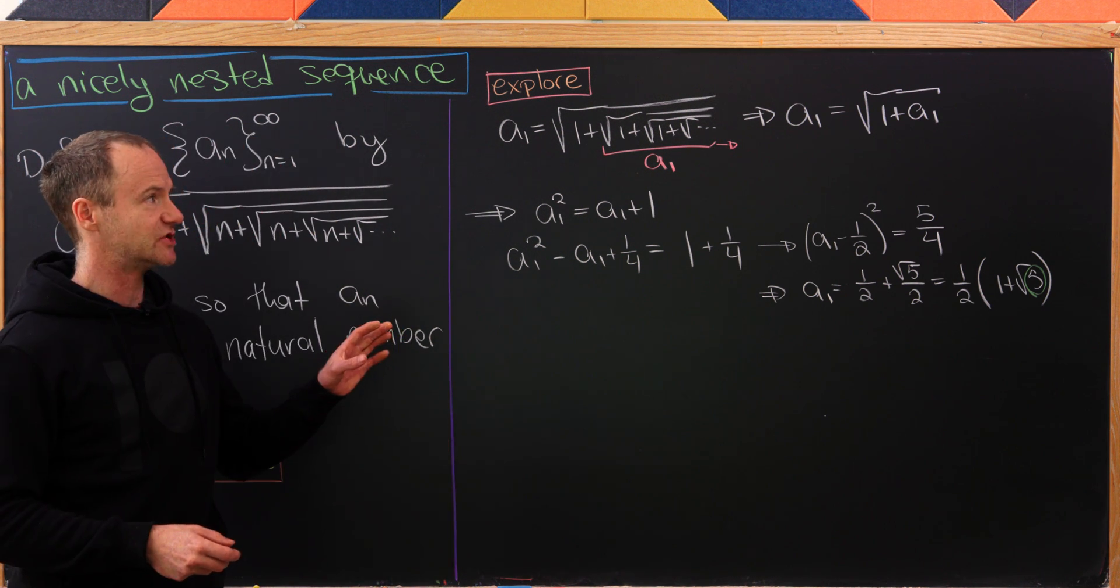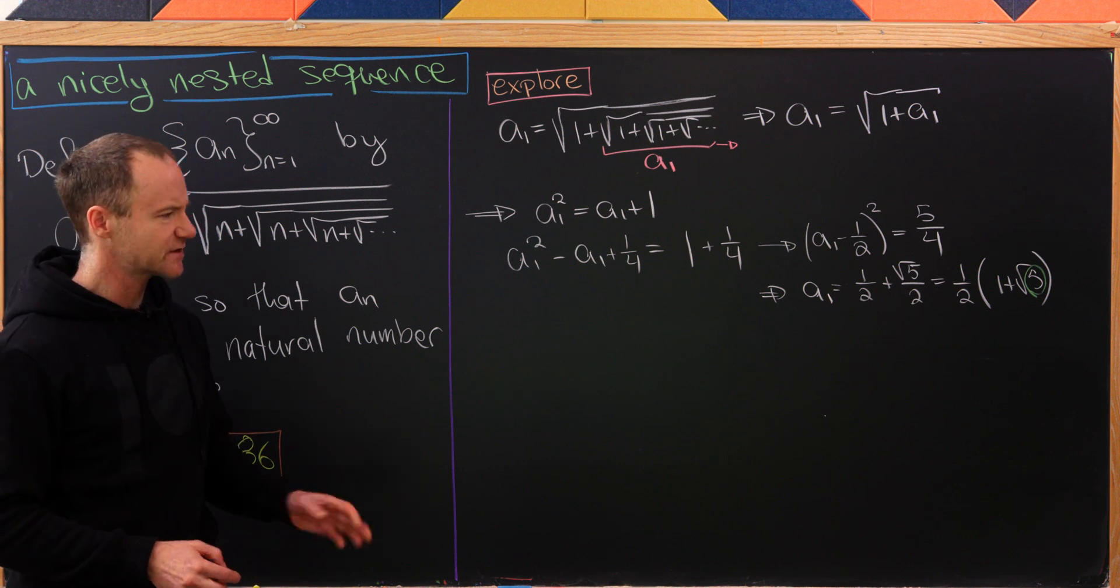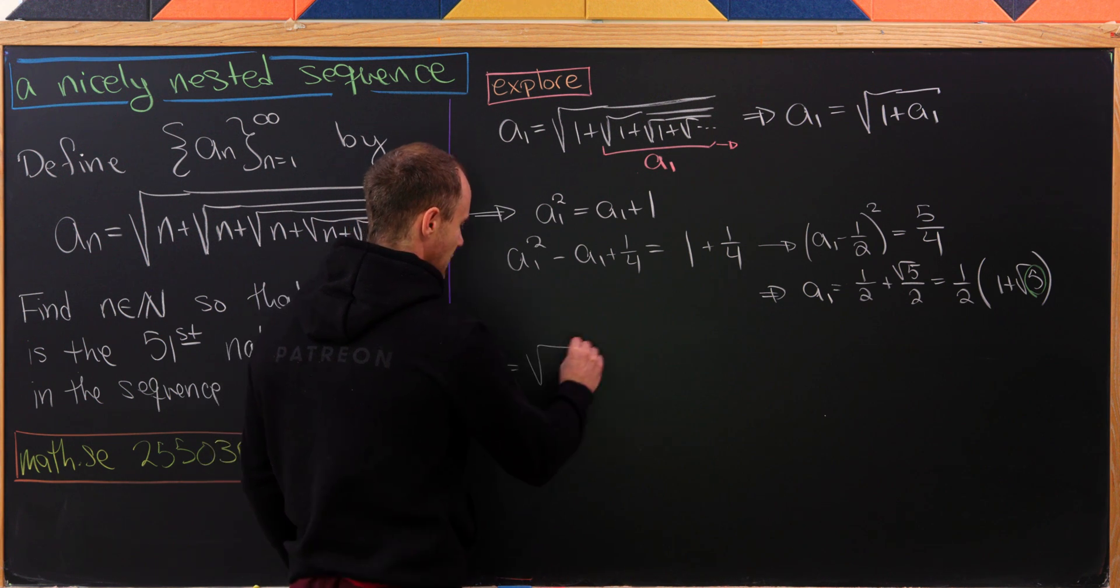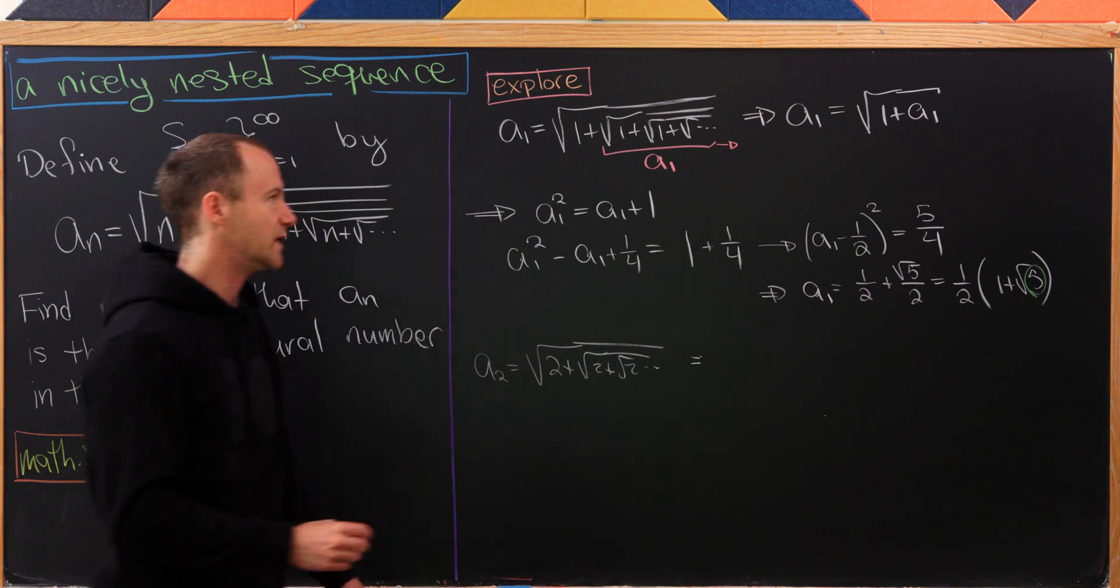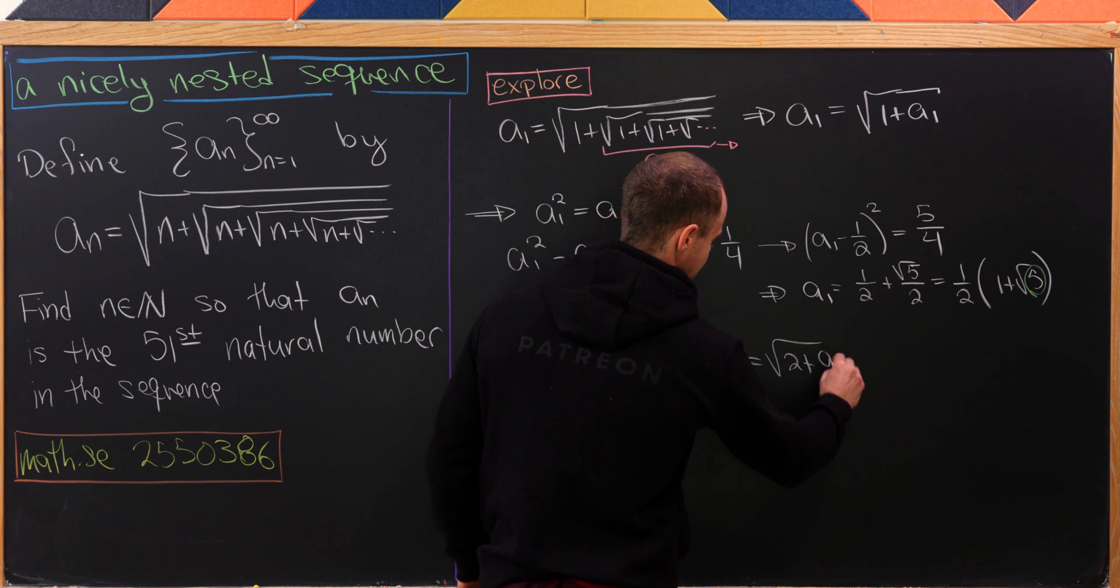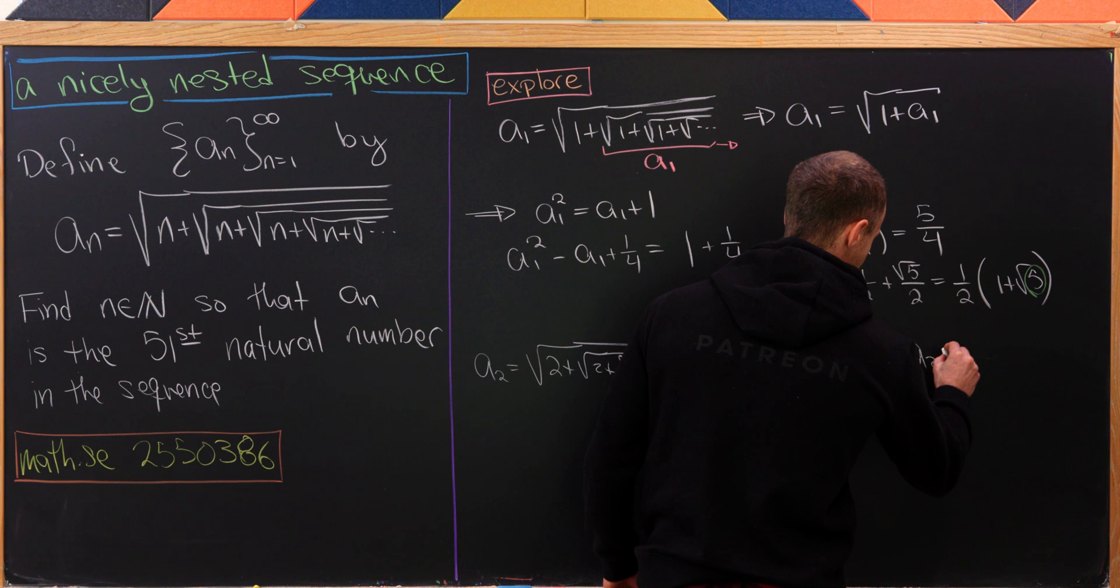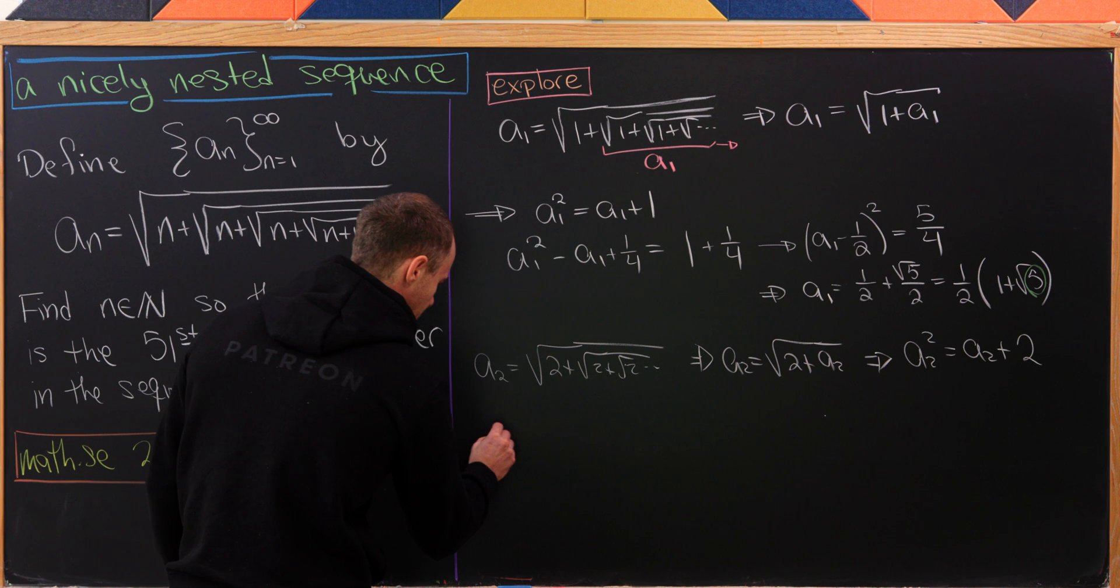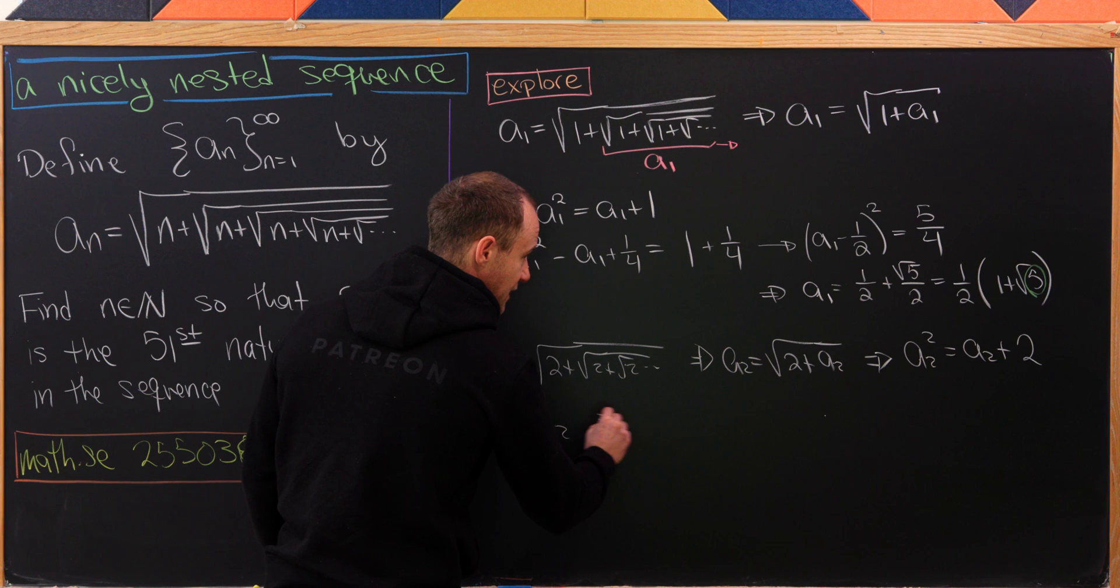We'll use a similar strategy moving forward, but we'll want to get a perfect square inside that last square root. For more exploration, let's look at the n equals 2 case. We have a_2 equals the square root of 2 plus the square root of 2 plus the square root of 2, infinitely nested. We can do the same trick and write a_2 as the square root of 2 plus a_2, then square both sides, leaving us with a_2 squared equals a_2 plus 2.